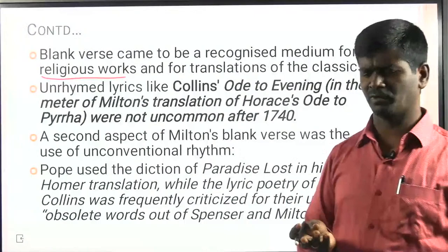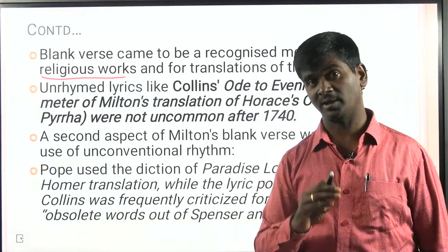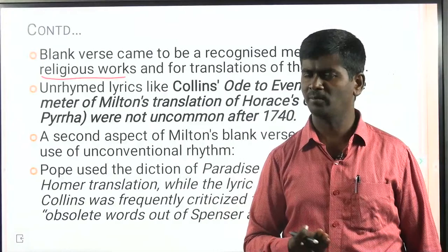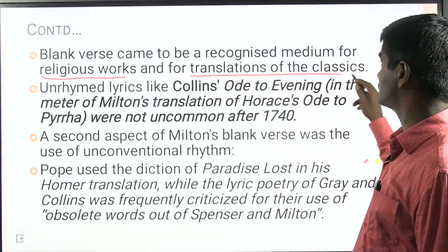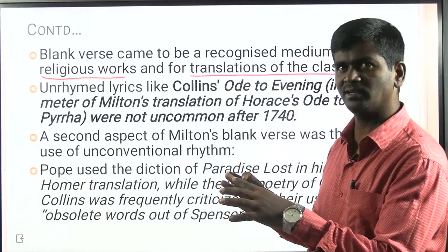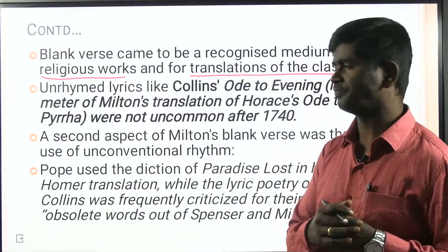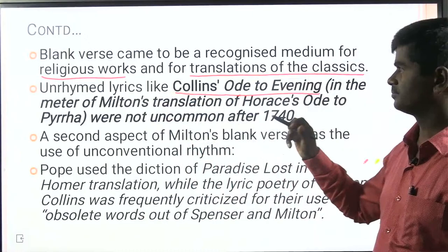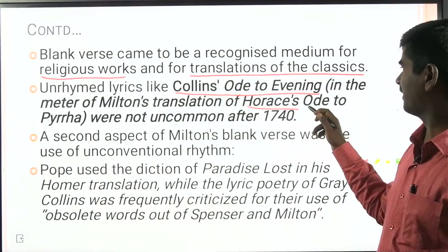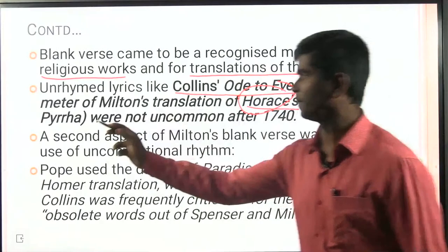Milton is an epic written by William Blake. The Fall of Hyperion by Keats is also a popular example. These epics are mainly examples of religious works composed in the form of blank verse, as well as translations of the classics. For example, the Iliad and Odyssey, translated by Alexander Pope into English using blank verse. Collins's Ode to Evening and Milton's translation of Horace's Ode to Pyrrha were also composed in blank verse.